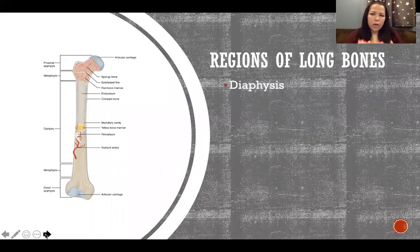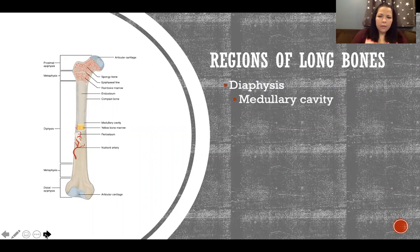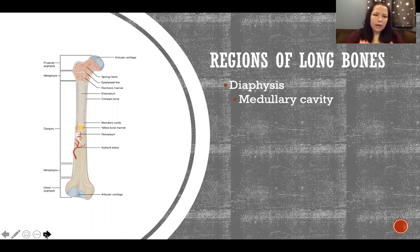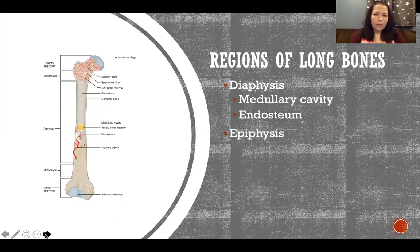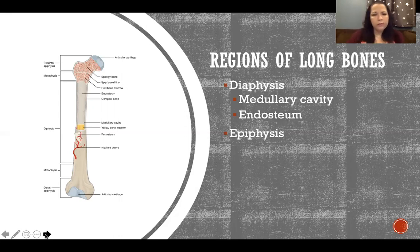Now, the regions of a long bone. The diaphysis is the long shaft of the bone. The medullary cavity is the hollow open space inside the diaphysis — not empty, but open. In kids it's full of red bone marrow, and in adults it's full of yellow bone marrow. The medullary cavity is lined by the endosteum, which is the epithelial lining of the inside of that cavity. The ends of the bone are called the epiphysis — one epiphysis, two epiphyses (plural) — there is one at either end.